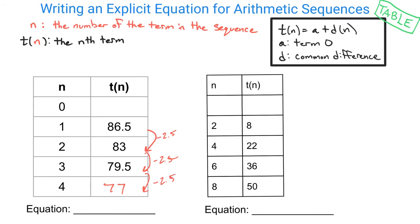We also need to figure out what our a value is, which is going to occur at term 0. So you need to go backwards, which means you would undo that process. To go backwards, you're going to have to add 2.5. And so as we add 2.5, we would see that this would start with a term 0 of 89.